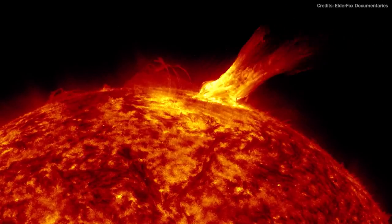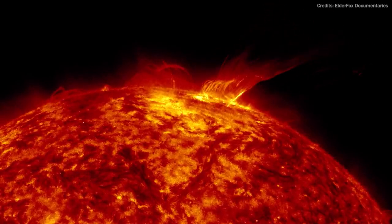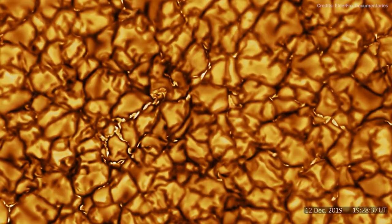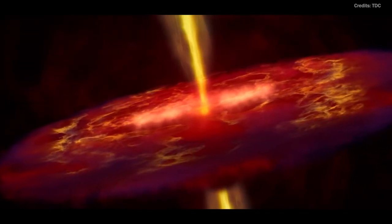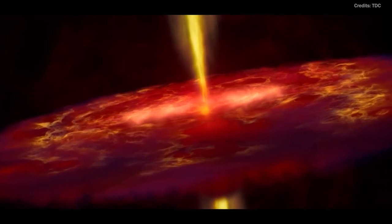Because the CNO cycle is dependent on heavy elements, the flux of neutrinos in the solar core scales with the abundance of metals. And because of the scaling, the flux can be used to determine the chemical composition of the sun at the time of its formation.